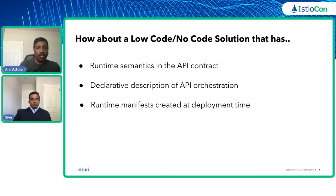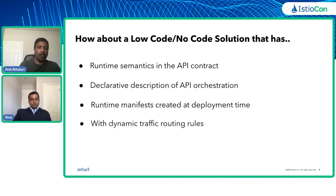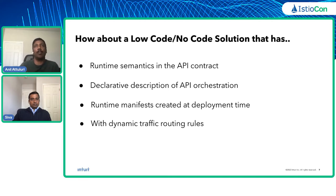How about also generating the manifests required for this orchestration layer at deployment time? You don't have to figure out this whole orchestration layer ahead of time — it becomes more of a dynamic, regenerated orchestration manifest. And last but not least, having dynamic routing rules: given an orchestration API is being called, what are those rules that will help route the request to the appropriate microservices?